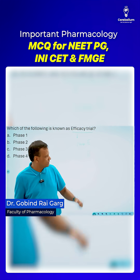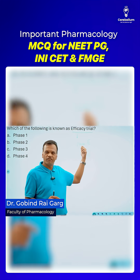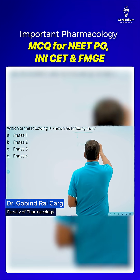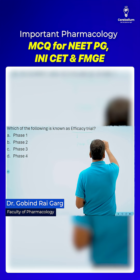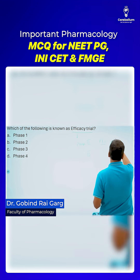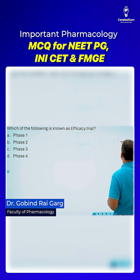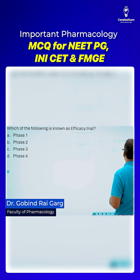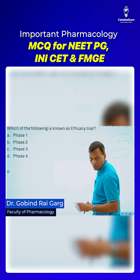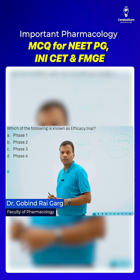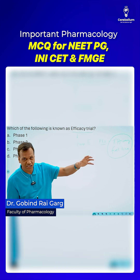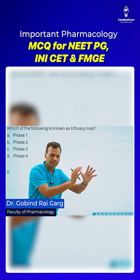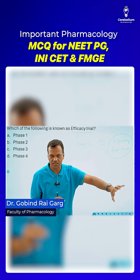Then we do phase two — first time in patients. So when we do it first time in patients, we are checking the efficacy for the first time. Preliminary evidence of efficacy comes in phase two, but it is only giving an indication, a hint, that the drug may be efficacious.